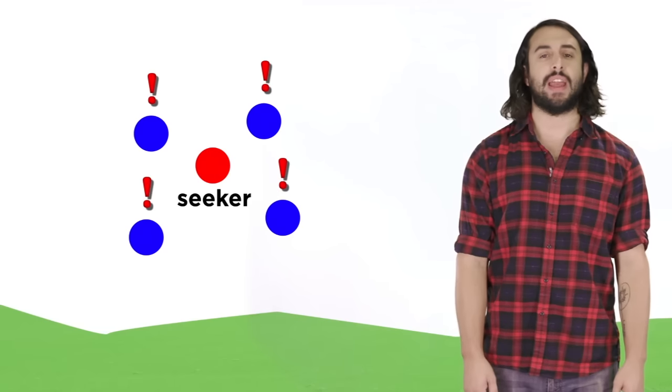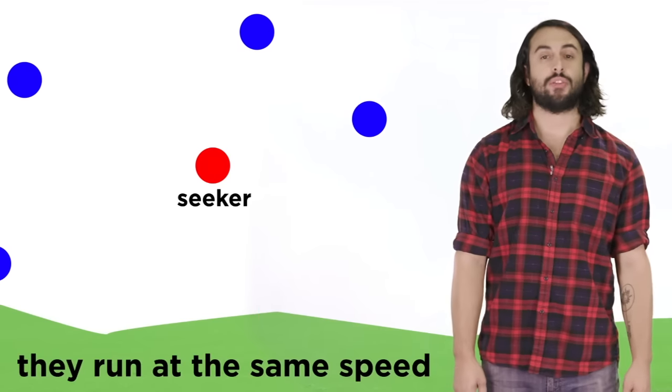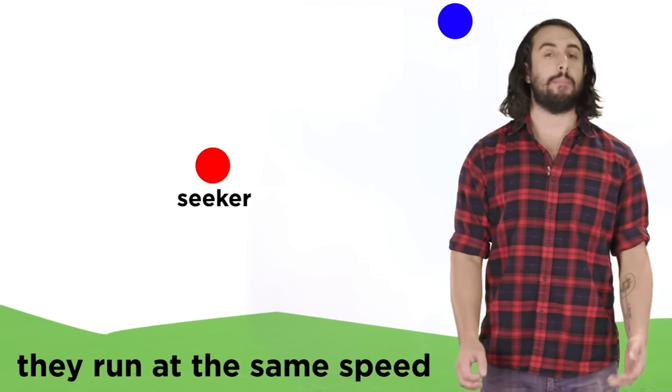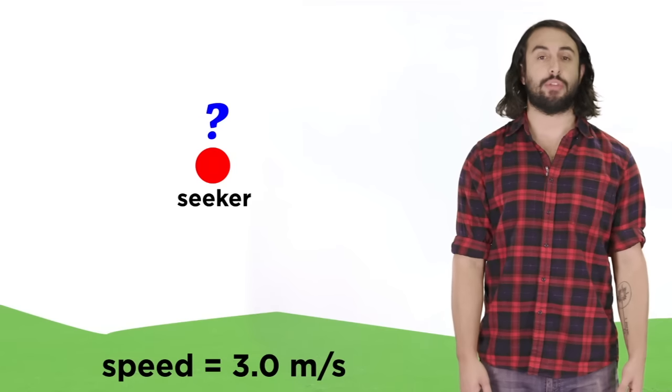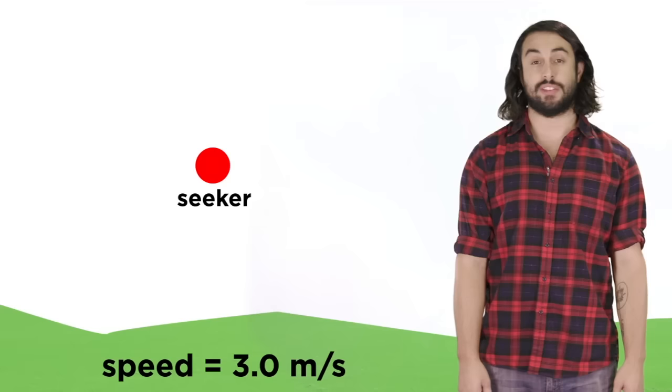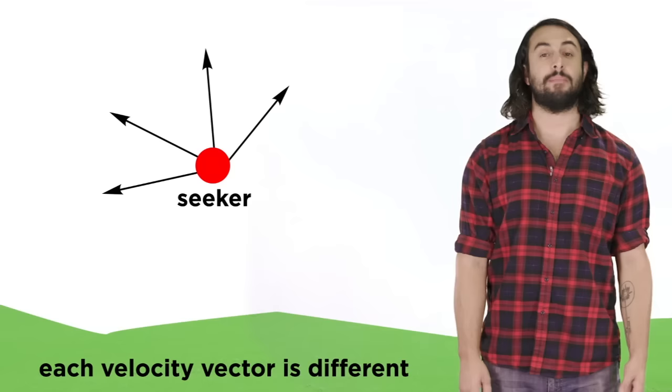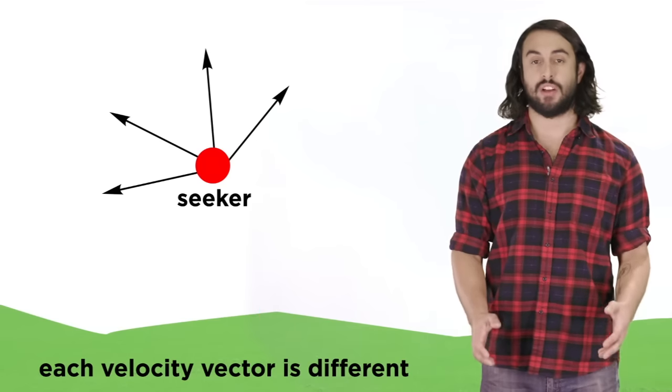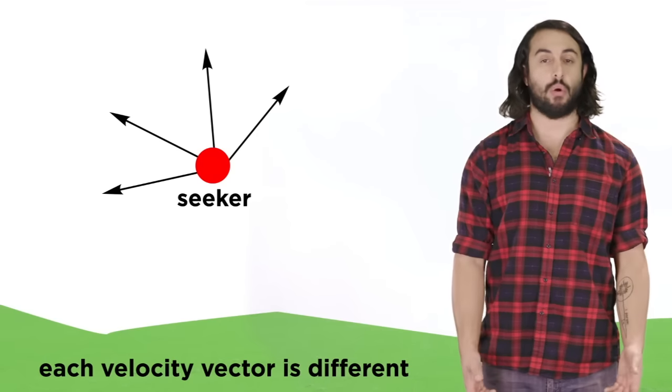If a group of kids are playing hide and seek, and they all run away from the seeker in different directions, it is possible that they all run at the same speed, because speed only has magnitude and no direction, so they could all run at a speed of three meters per second if they are quick little devils, but each kid would have a unique velocity vector that has a magnitude of three, but also describes the direction of motion, most likely using the seeker standing still as the point of origin.